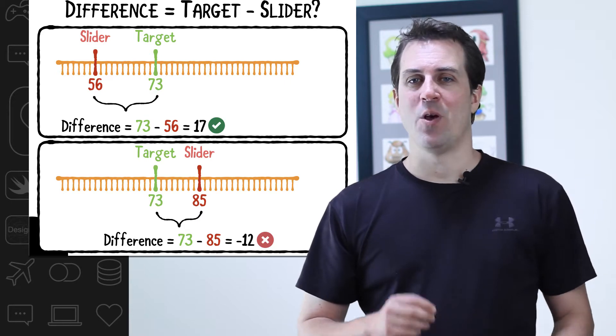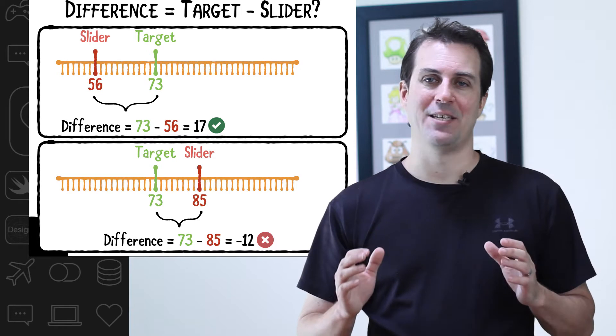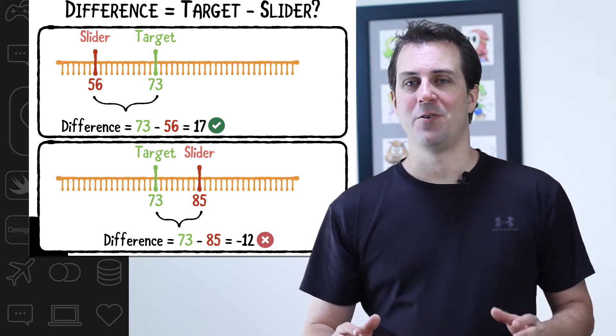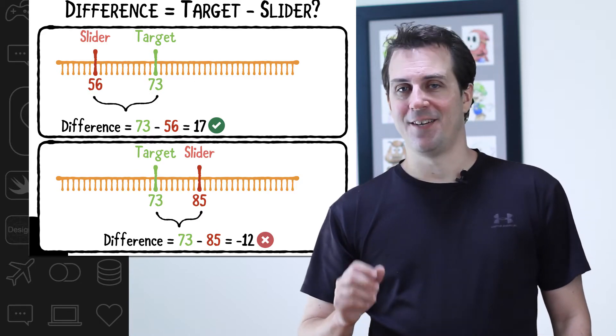Your challenge is to pause the video and write down in plain English how you would solve this problem and calculate the difference so that you always get a positive value. Don't worry about how to code it in Swift, just worry about how you would accomplish this in English. Now pause the video and good luck.